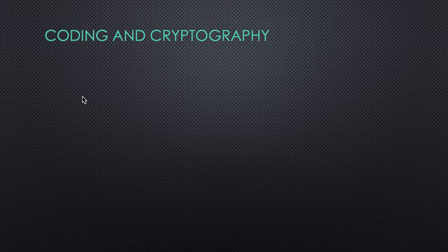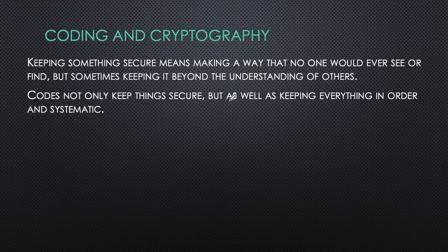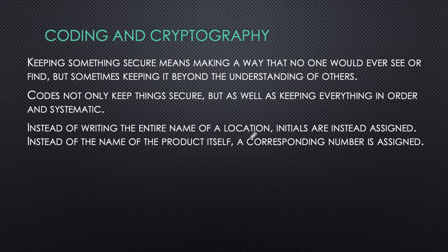Keeping something secure means making a way that no one would ever see or find it, but sometimes it means keeping it beyond the understanding of others. Codes not only keep things secure but also keep everything in order and make it systematic. Instead of writing the entire name of a location, we can use initials; instead of the full name of a product, we can use a corresponding number.